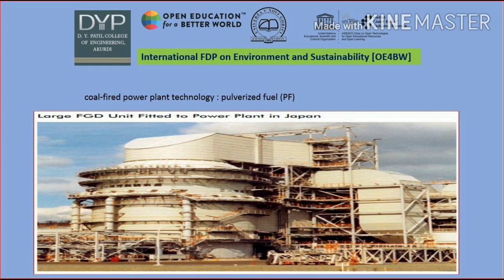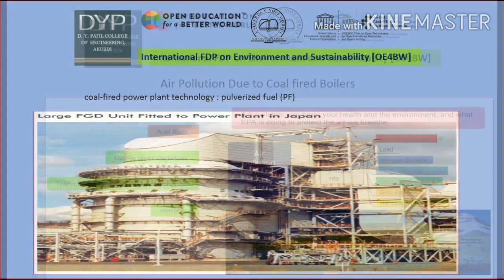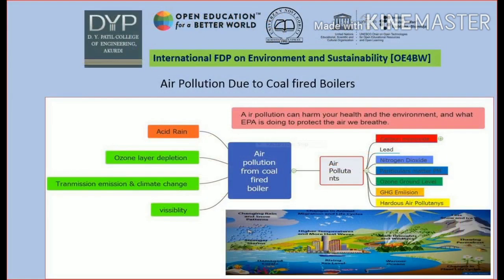A large amount of gases are evolved into the atmosphere, resulting in air pollution due to coal fired boilers. The air pollutants include acid rain, ozone layer depletion, transmission, emission, climate change, and visibility effects.